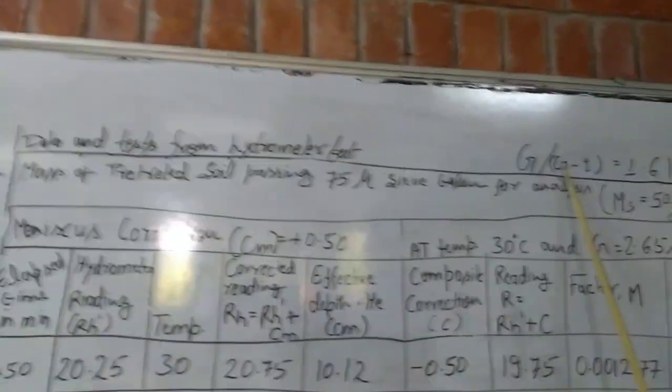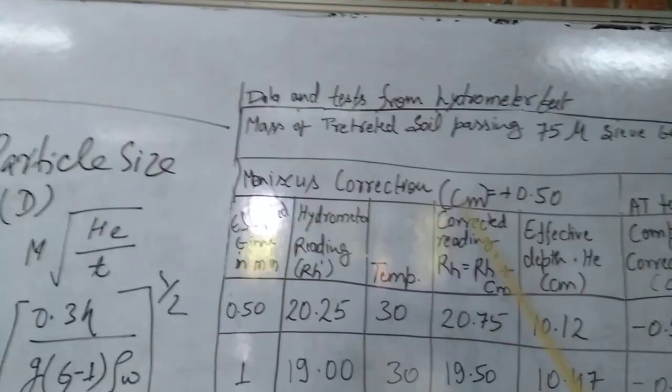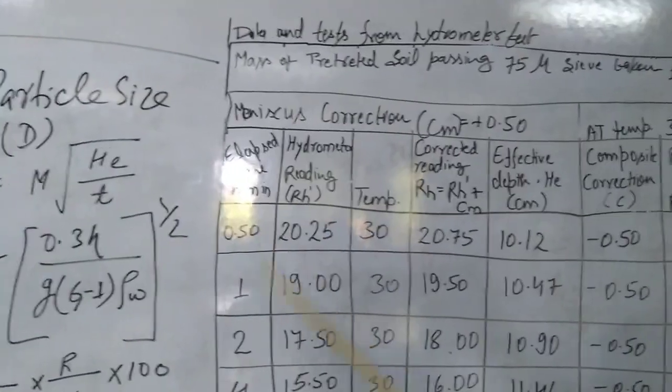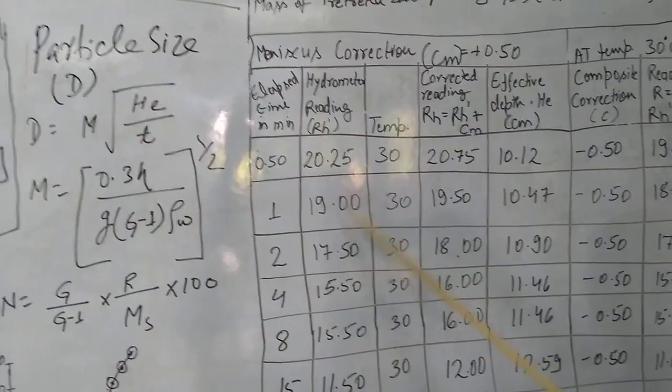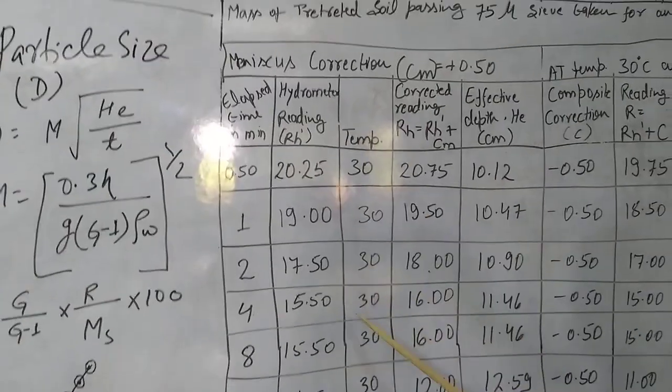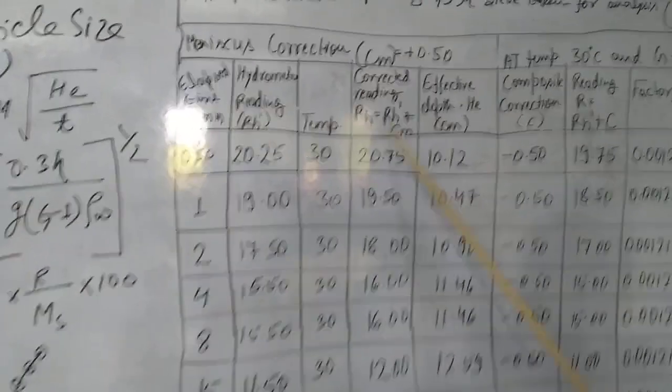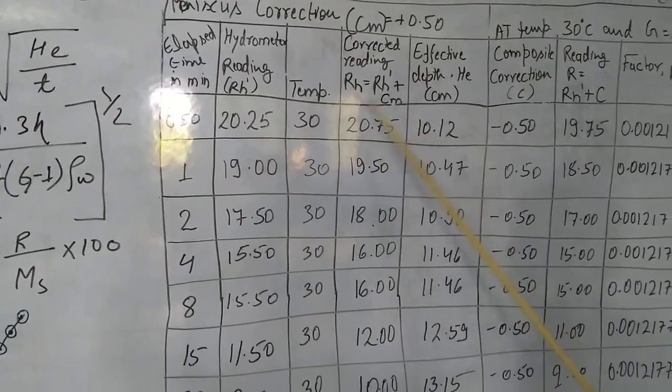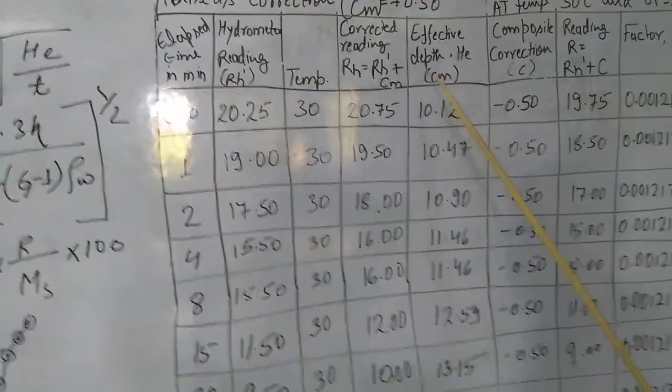Now we shall come to the table. The specific gravity we have already determined for our soil sample. 50 gram soil sample we have taken, and minus 0.5 we have to take. You can see in this table, at various time intervals we have to take the hydrometer readings. Suppose first reading is 20.25, and the temperature of the soil suspension is 30 degrees. Our meniscus correction minus 0.5 we are going to add here, and this value will become 20.75. This value we have to use to find out the effective height, which we have already seen in case of calibration of hydrometer.